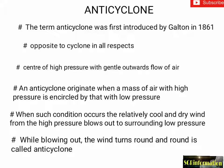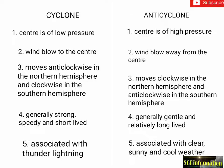The term anti-cyclone was first introduced by Galton in 1861. An anti-cyclone is opposite to a cyclone in all respects — it has a center of high pressure with a gentle outward flow of air. An anti-cyclone originates when a mass of air with high pressure is encircled by air with low pressure. The relatively cool and dry wind from the high pressure blows out to the surrounding low pressure, turning round and round, and is called an anti-cyclone.